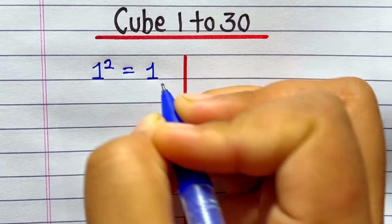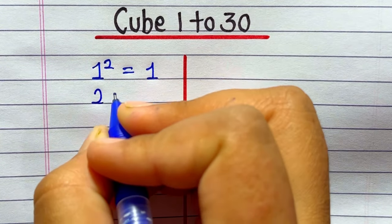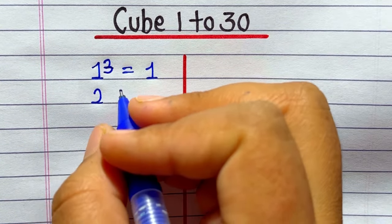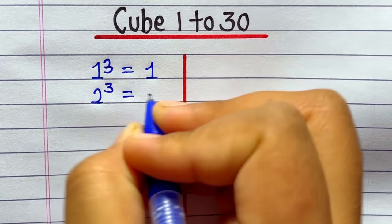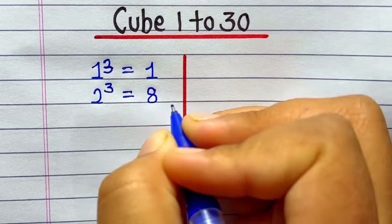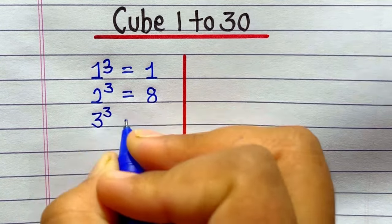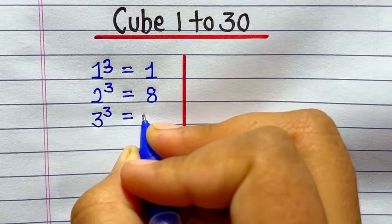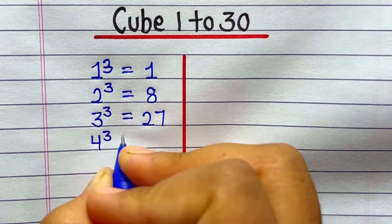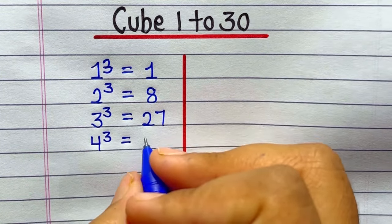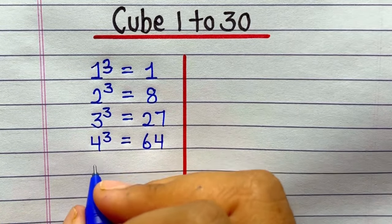1 ka cube hoga 1. 2 ka cube hoga 8. 3 ka cube hai 27. 4 ka cube hai 64.